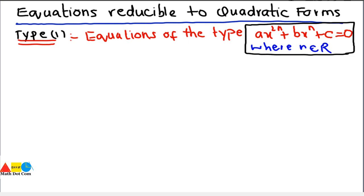When we put n equals to 2, it becomes ax^4 plus bx squared plus c equals to 0. If you come across equations like this which are not in the standard quadratic form, we need to know how to solve them. We will discuss through examples how to solve equations of this form.